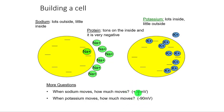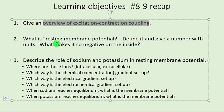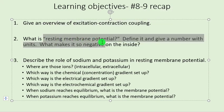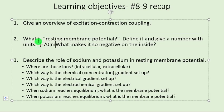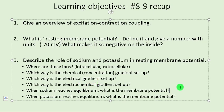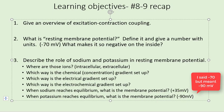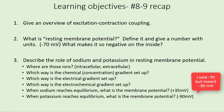When sodium reaches equilibrium, the electrical property is actually positive 35 millivolts. When potassium reaches equilibrium, the electrical property is negative 90 millivolts. To recap: we gave an overview of excitation-contraction coupling; we defined resting membrane potential — the number is negative 70 millivolts, and what makes it so negative on the inside is protein. You know where these ions are, how the chemical gradient is set up, how the electrical gradient is set up, and the electrochemical gradient. We'll talk more about action potentials in follow-up videos.